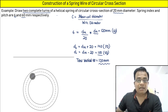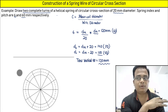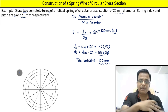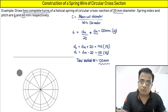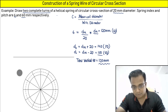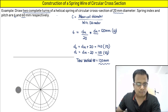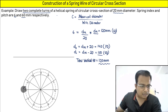Divide the circle into 12 equal parts. Whenever solving a problem based on a helix, always use 12 divisions rather than 8, because with 8 divisions the points are far apart and it becomes difficult to join them with a smooth curve. So use the 12-division approach. Now project the points upward and number them at the center.